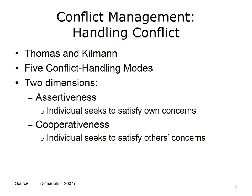Thomas and Kilman provide us with five conflict handling modes. Such modes can assist in responding or coping with conflict situations and can also be viewed as traits that individuals habitually use to confront and deal with conflict. The five modes occur within two major dimensions: assertiveness, when an individual seeks to satisfy his or her own concerns, and cooperativeness, when an individual seeks to satisfy others' concerns.